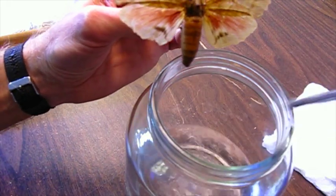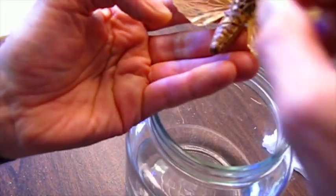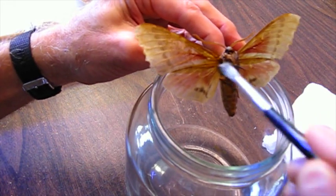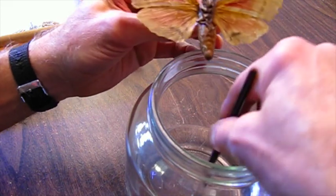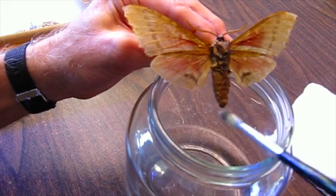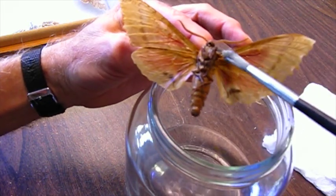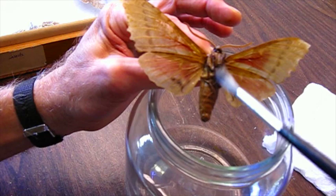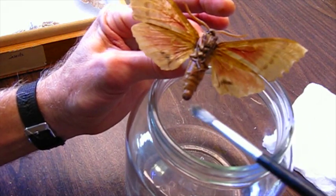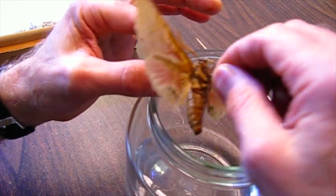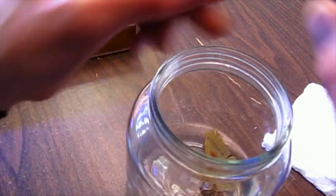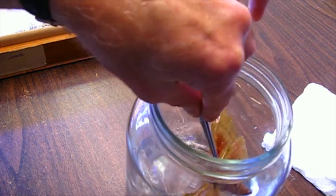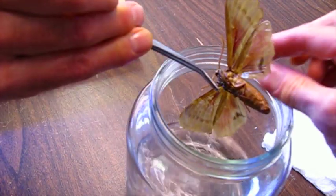Now flip it over and do the other side. I've done this before with specimens and I have not seen the mold return, so I'm pretty sure that the acetone actually kills the mold spores and filaments. Now I'm going to rinse it off, just plunk it in there and let it rinse, swish it around a little bit, and then let it drip.